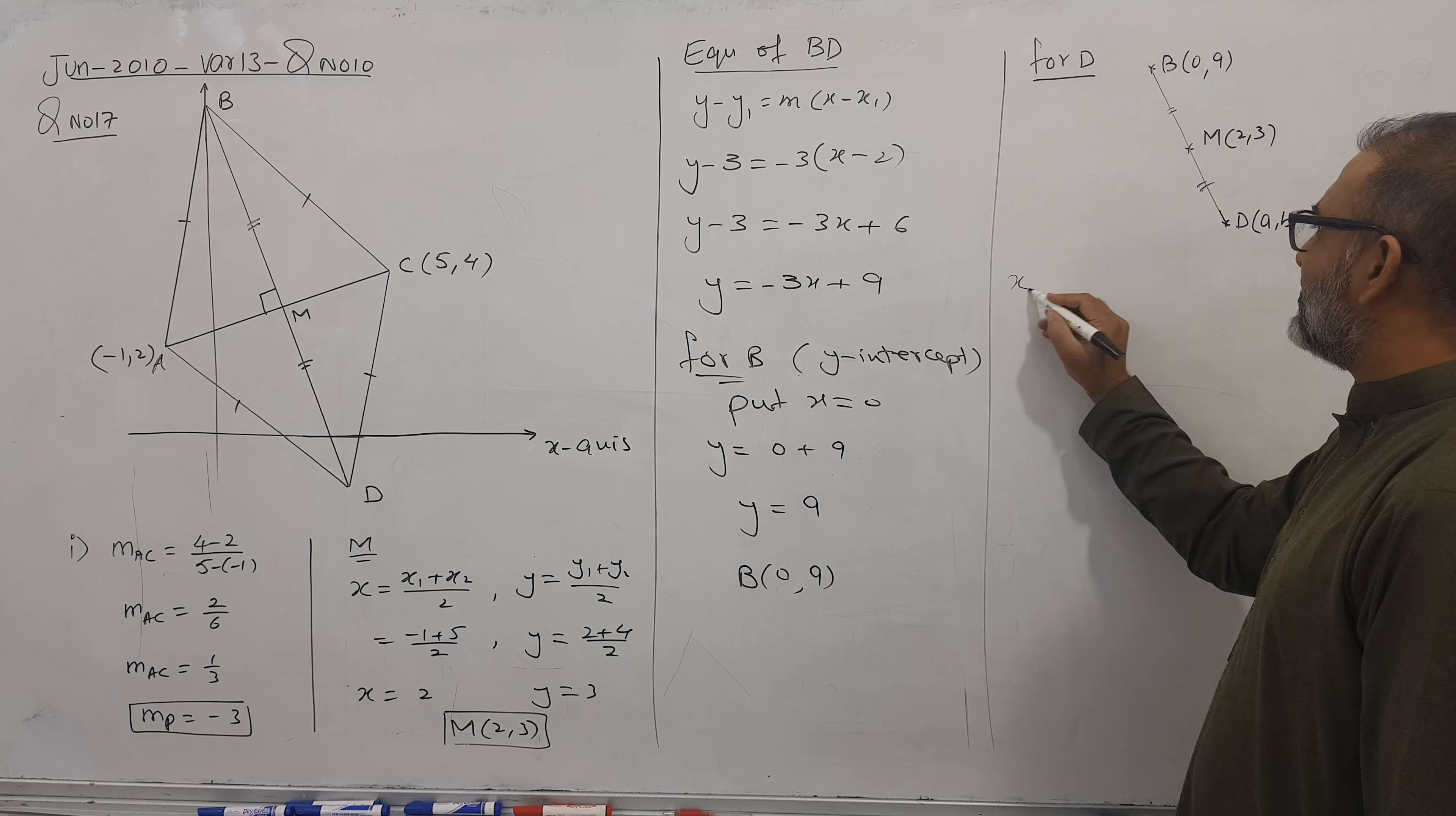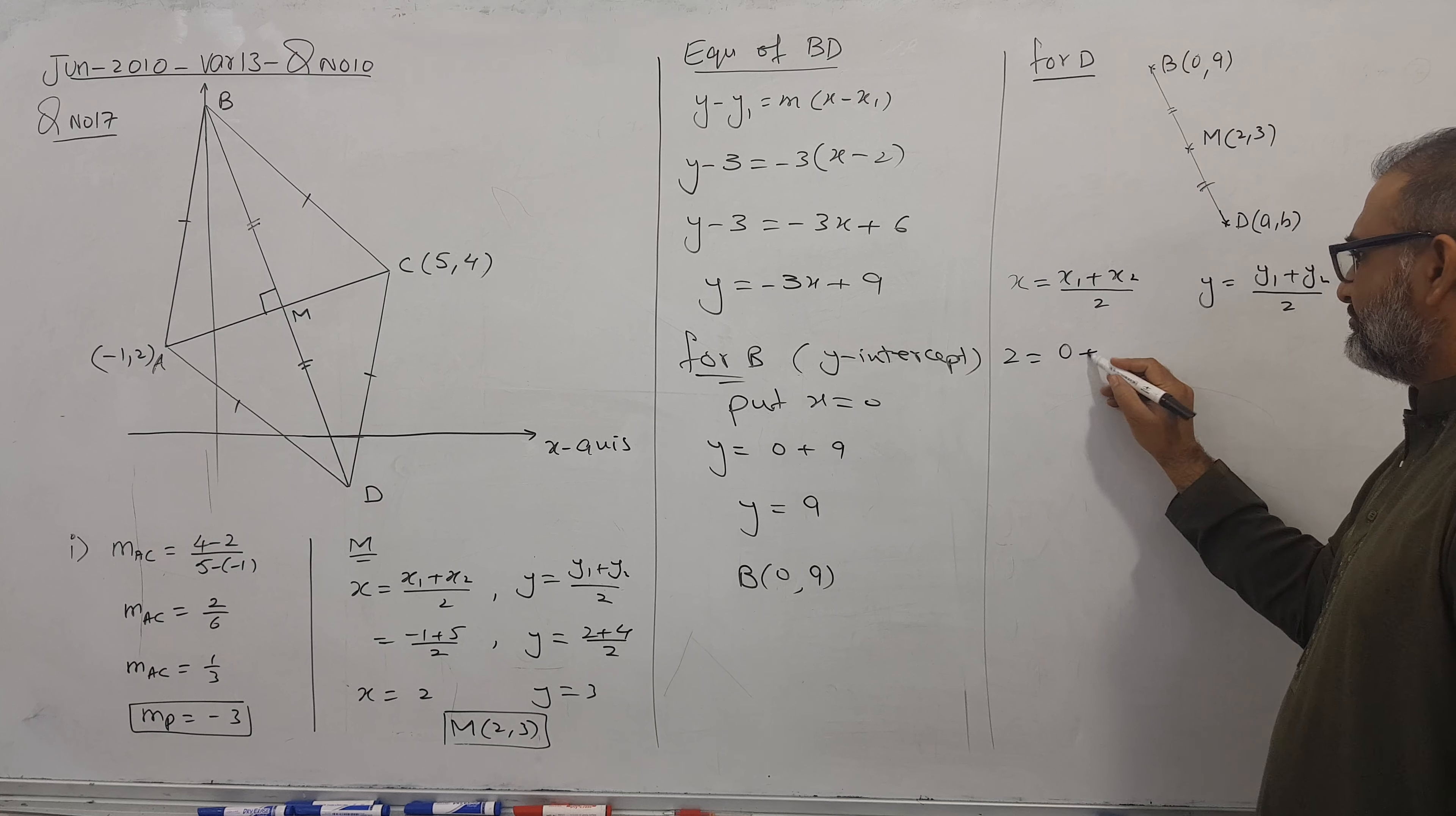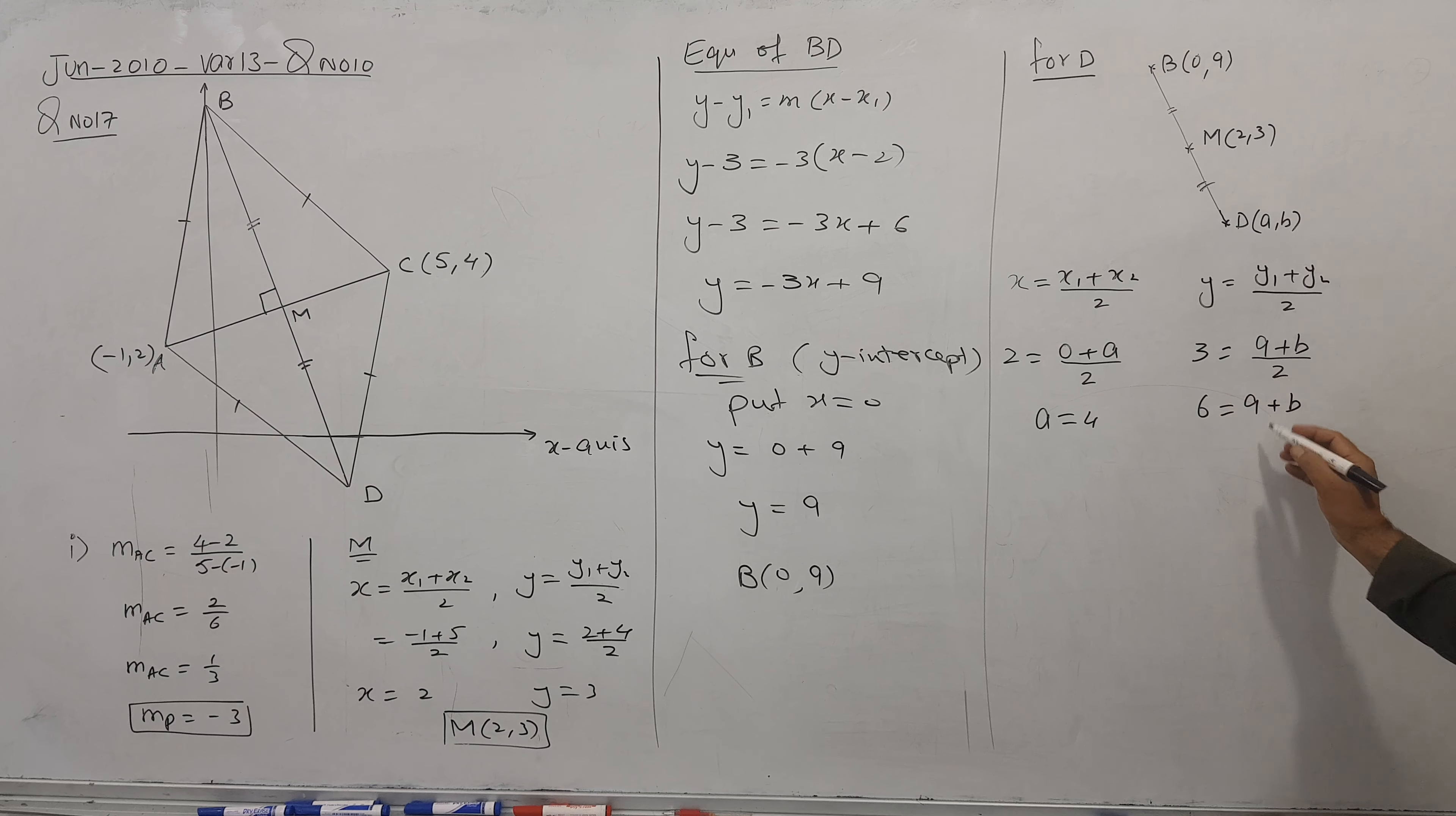Midpoint technique: x1 plus x2 divided by 2, and similarly y1 plus y2 divided by 2. What is the midpoint? This 2 comes here. What are the corner elements? 0 and A. So 2 goes there, A becomes 4. Similarly, this midpoint 3 comes here. Corner points are 9 and B. 3 times 2 is 6 equals 9 plus B. I think very clear, this is coming minus 3.